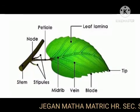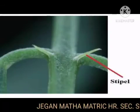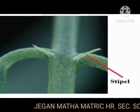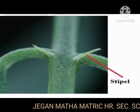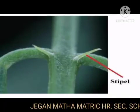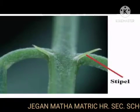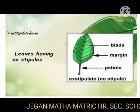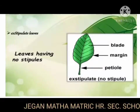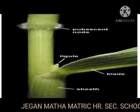The lamina shows great variation in shape, margin, surface, texture, color, venation, and incision. In most dicotyledonous plants, the leaf base bears one or two lateral appendages called stipules. Leaves with stipules are called stipulate; leaves without stipules are called exstipulate or e-stipulate.